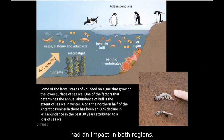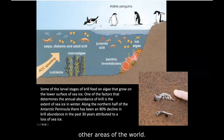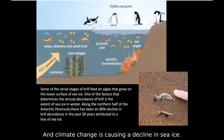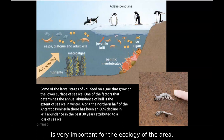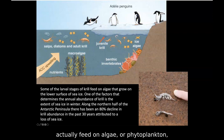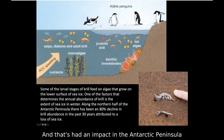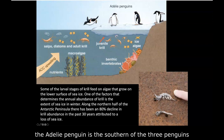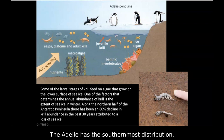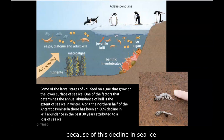Climate change has had an impact in both regions. It's impacting the polar regions at about three times the rate it's affecting other areas of the world. Climate change is causing a decline in sea ice, which is a huge problem because sea ice is very important for the ecology. For example, juvenile stages of krill feed on algae or phytoplankton that grow on the underside of the sea ice. In the last 30 years there's been an 80% decline in krill abundance attributed to loss of sea ice, which has caused the Adélie penguin's numbers to decrease and its range to be forced further south.